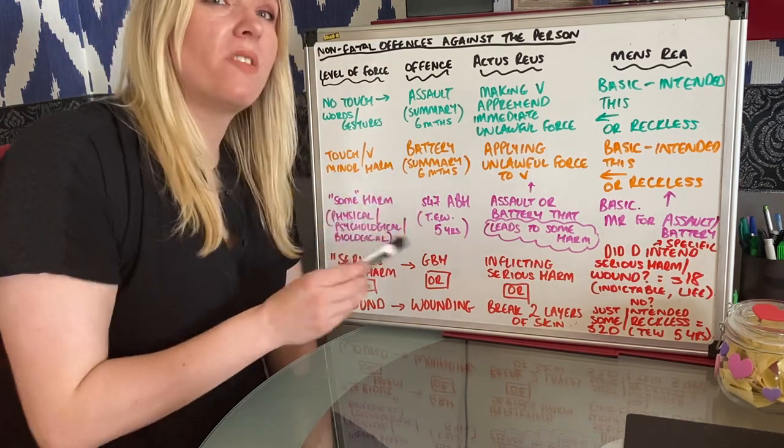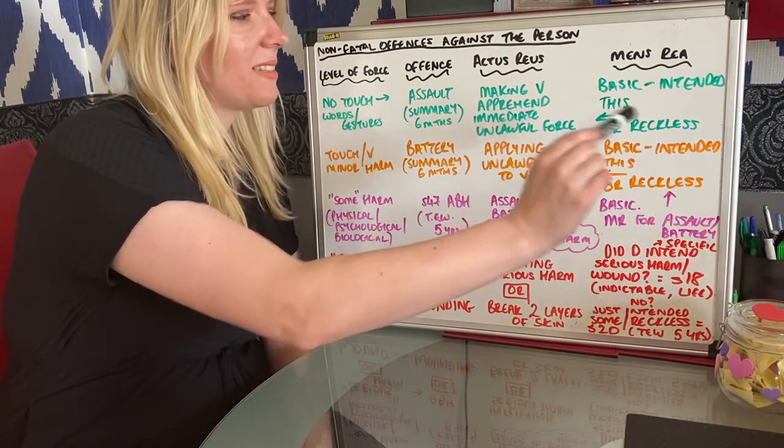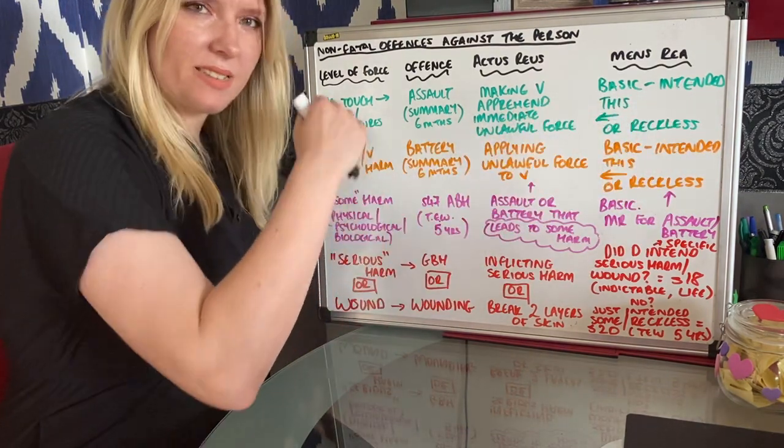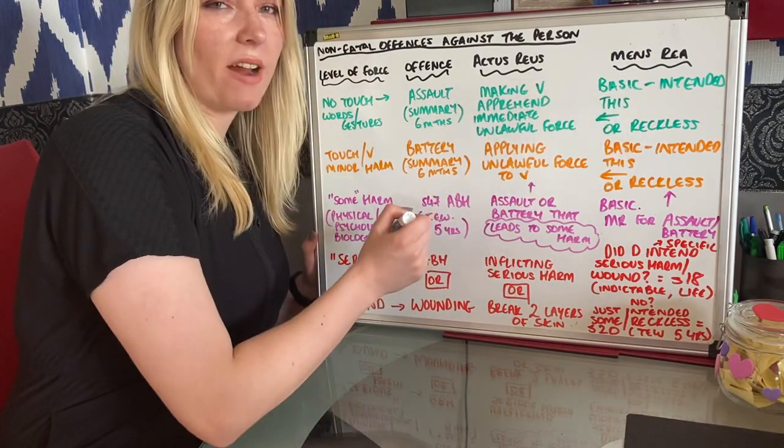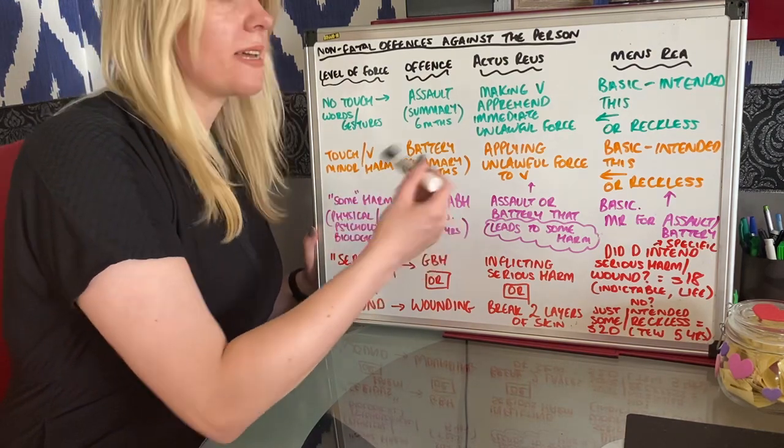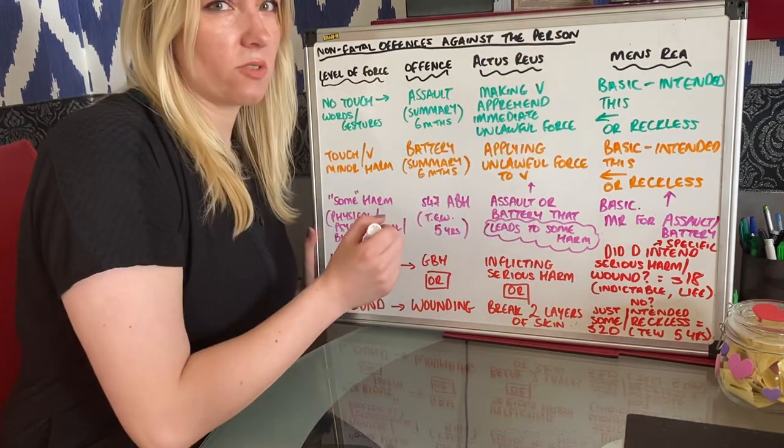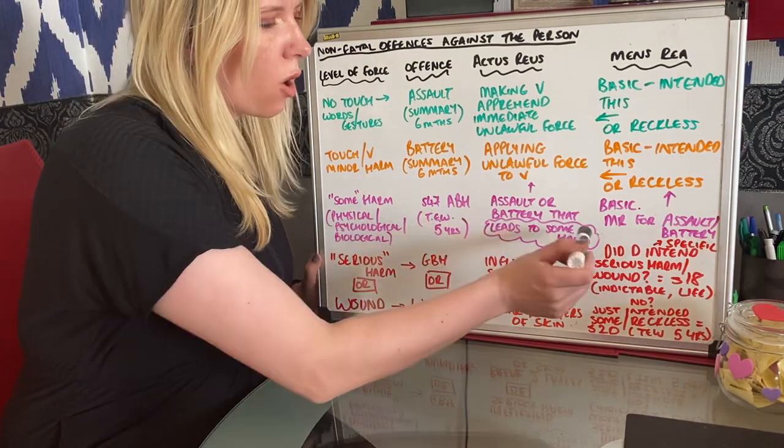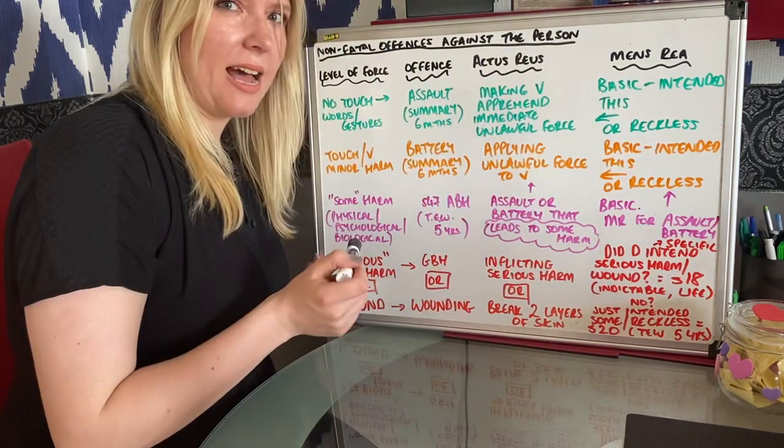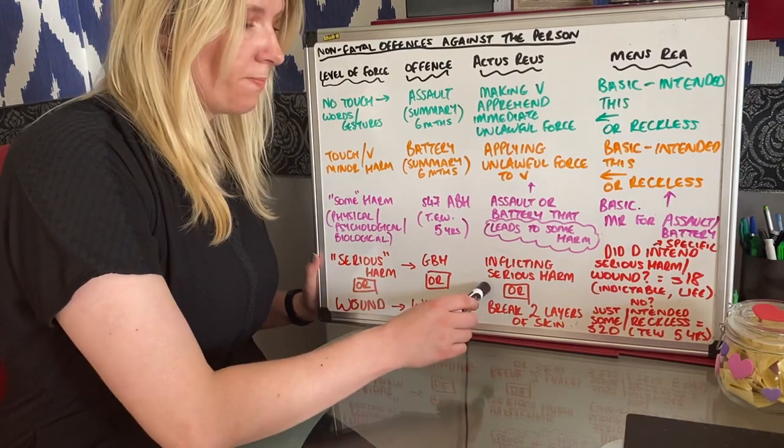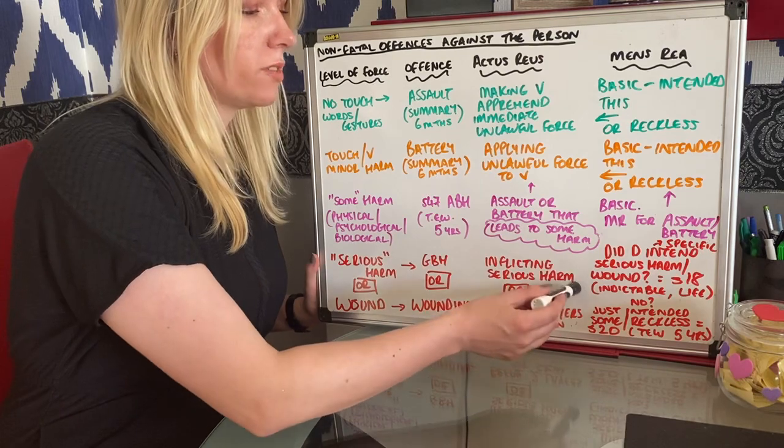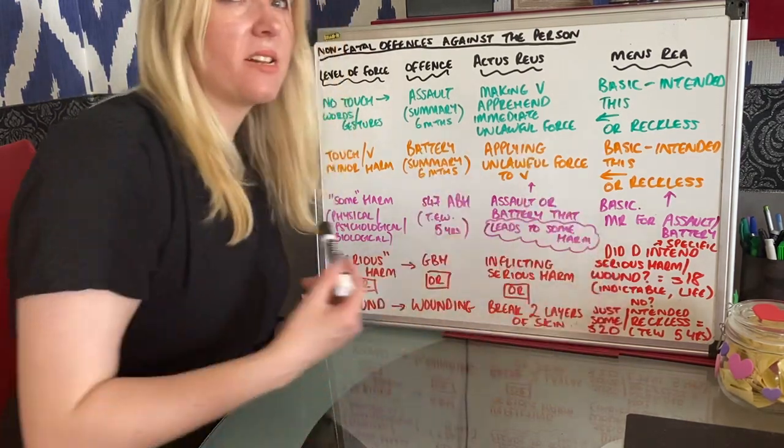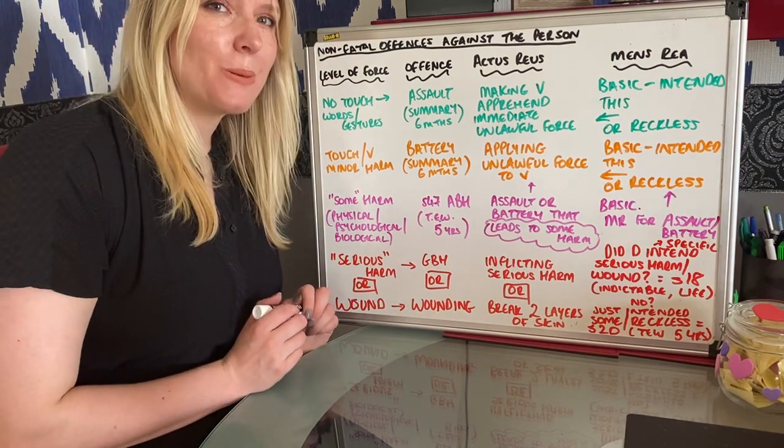Now it seems very complicated. I hope this has helped. The key to remember is the different levels. So assault is easy - the actus reus and the mens rea are the same level. Make them fear force, intend or reckless as to make them fear force. Battery similarly is the same - you wanted to apply force, that was the actus reus. It's the Offenses Against the Person Act that could do with reform here. Actus reus - you cause some harm, but the mens rea is the next level down. For GBH and wounding Section 20, you have to cause the serious harm or wound, but it's the next level down. And Section 18 is the same again - you have to cause serious harm or a wound and actually intend serious harm or a wound. I hope that helps. Thank you for listening.